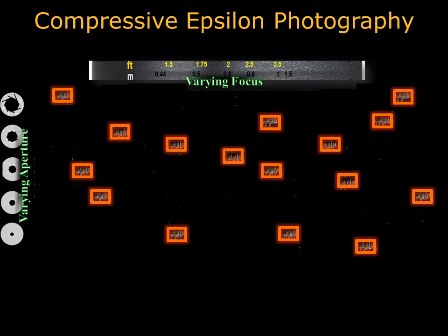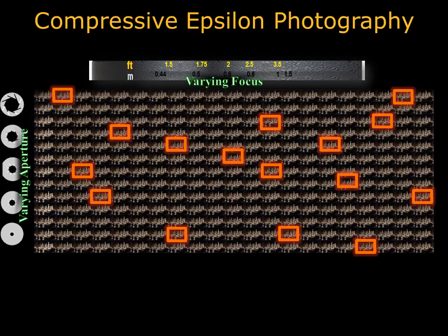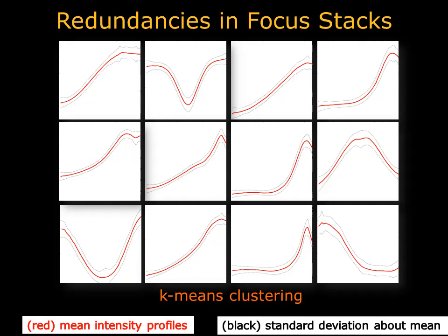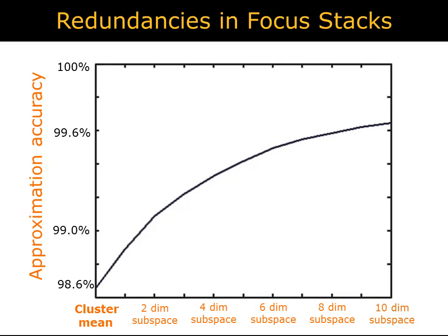This means that the user can arbitrarily set aperture and focus settings after taking just this subset of images. To understand why, consider how the intensity at a pixel changes with respect to where the camera is focused, as shown on the right. Peaks or valleys appear in these profiles when their respective pixels come into focus. We perform k-means clustering with 50 clusters on the normalized intensity profiles for many such pixels, and results show very tight clusters, confirming the structure present. Representing the intensity profiles as low-dimensional projections around these clusters results in very good approximations.